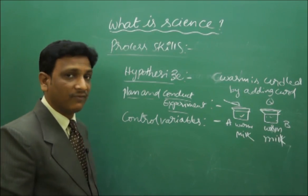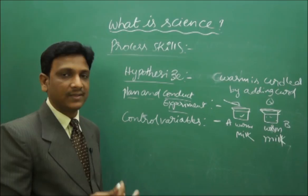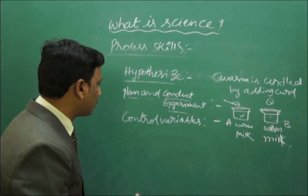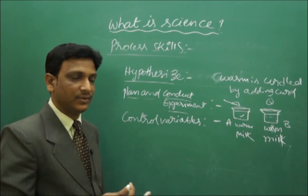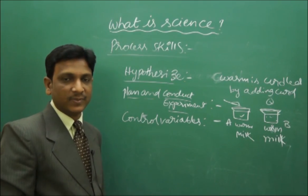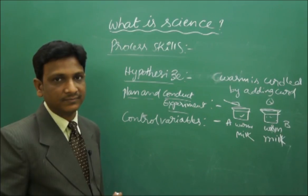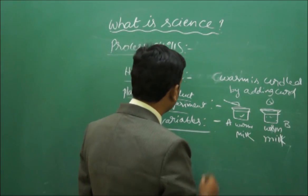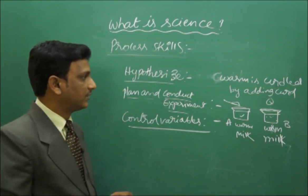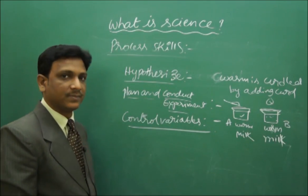Actually it should not be. Why? Because the variables are not controlled. Control of variables is also very important. We should see that there is only one variable. If other variables are interfering, then the experiment will be spoiled. In such a way, control of variables is also one of the process skills for finding an answer and investigating an experiment.